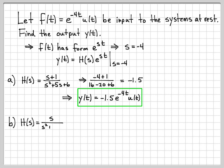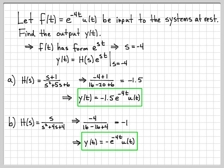For the other system, this was our transfer function. My input is e to the minus 4t, so s is equal to negative 4. I need to know what the transfer function at s equals negative 4 is — replace all the s's with minus 4. Plugging in gives negative 1, which means my output would be minus 1 times e to the negative 4t times u of t.